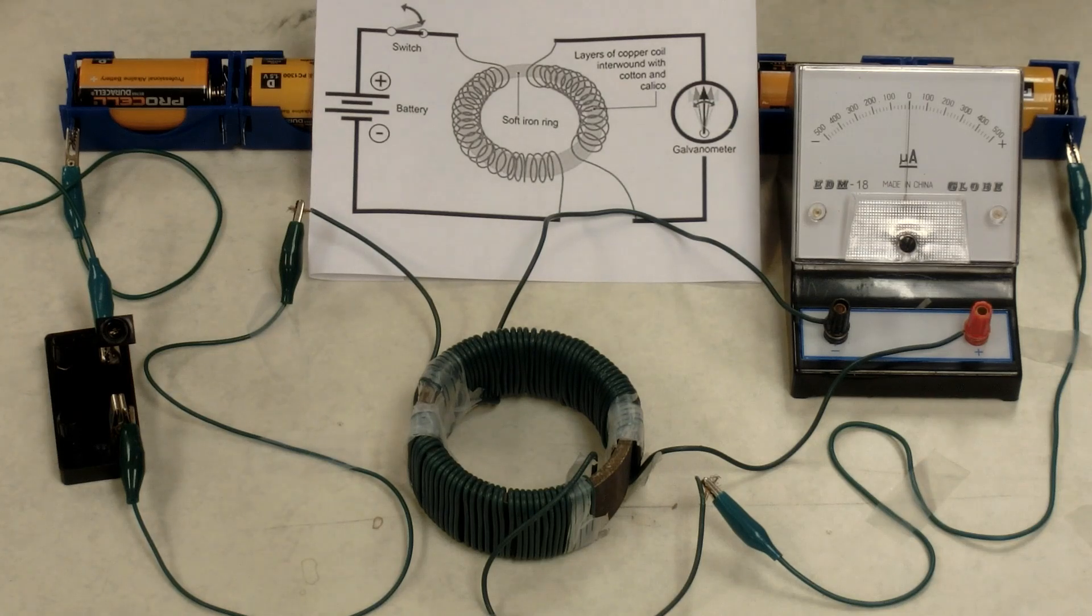In 1831, Michael Faraday wrapped two insulated coils of wire around an iron ring and found that upon passing a current through one coil, a momentary current was induced in the other coil. This phenomenon is known as mutual or electromagnetic induction.